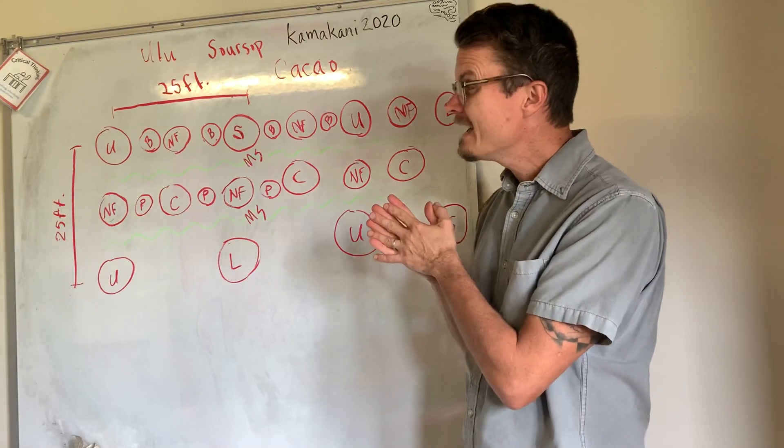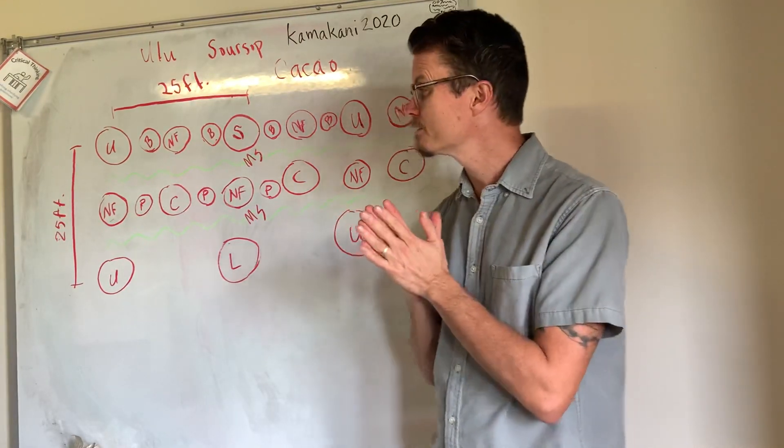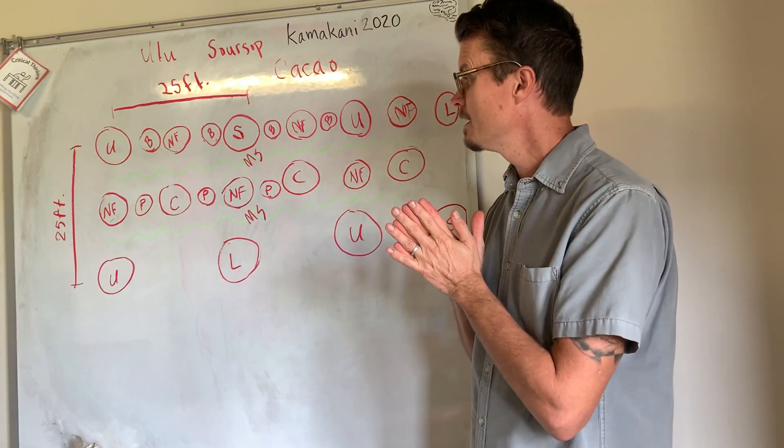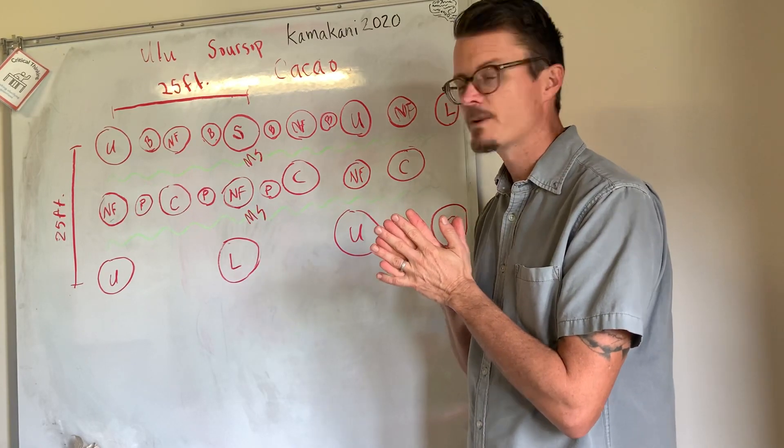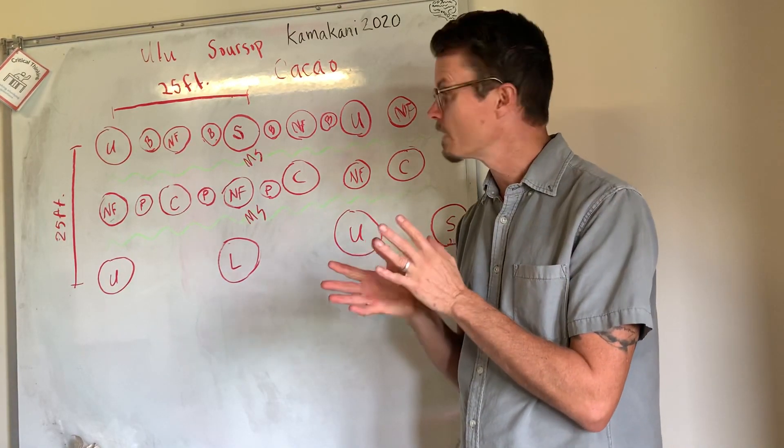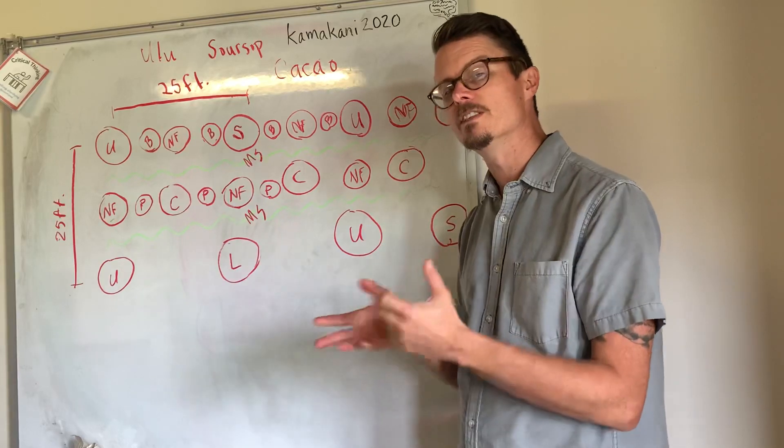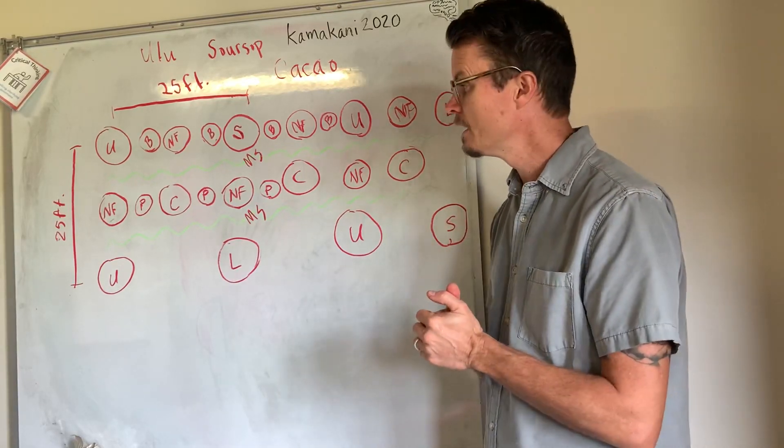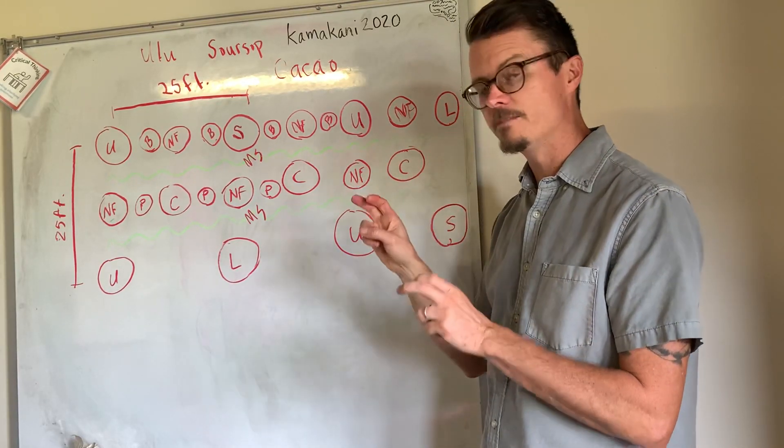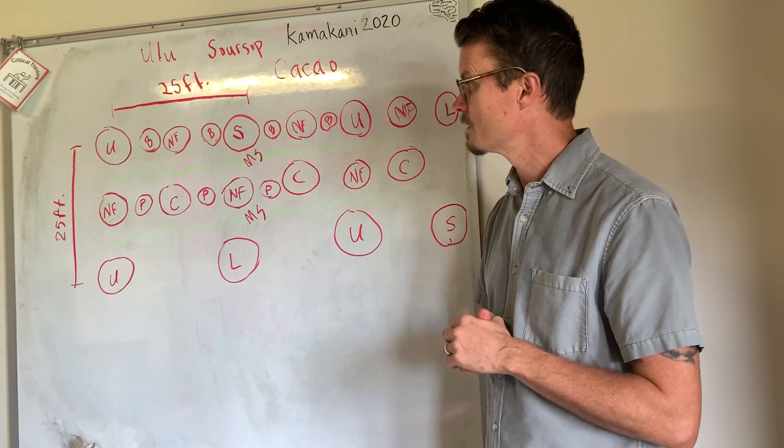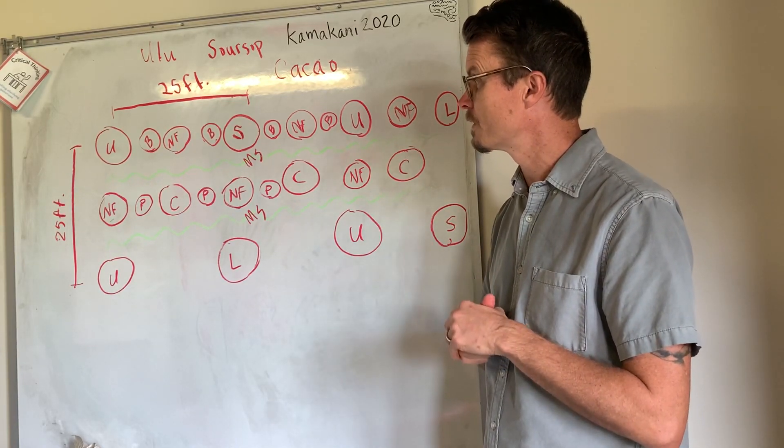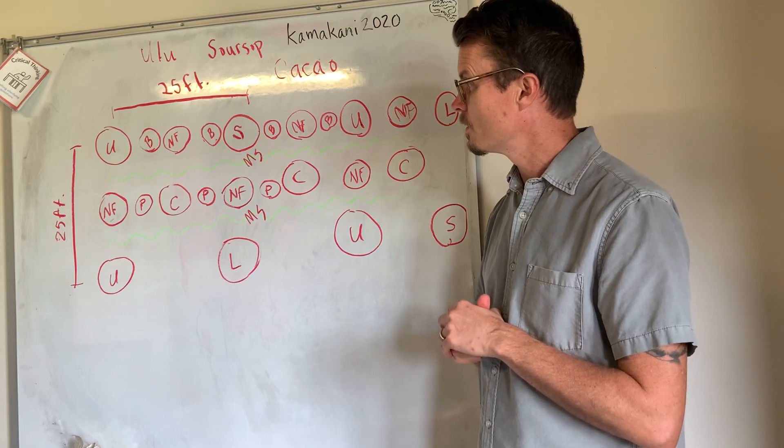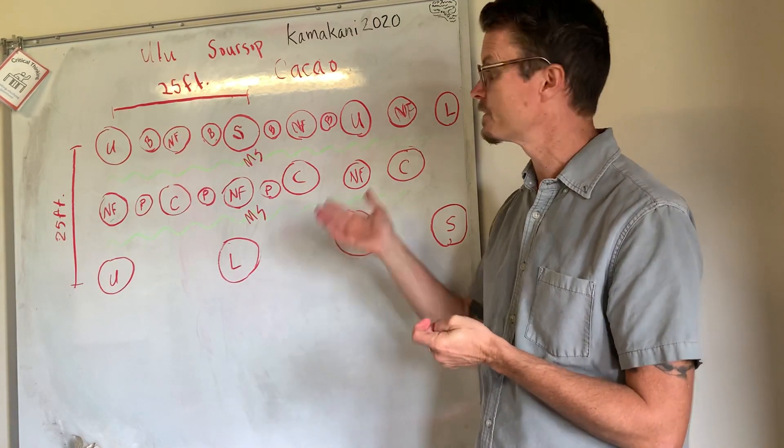And then again, I may add other food crops in here just depending. Sometimes when I get out on the site, I sort of have a feeling of like, oh, I could fit this in or this would do really well here. But as far as the on paper design, this is what we're thinking about for right now.